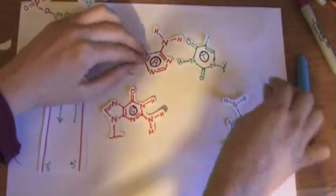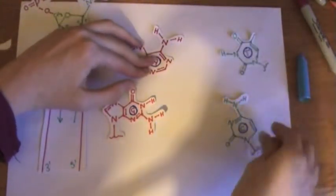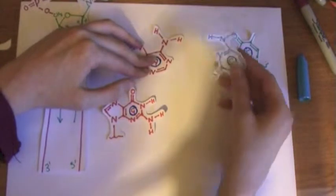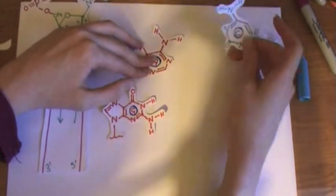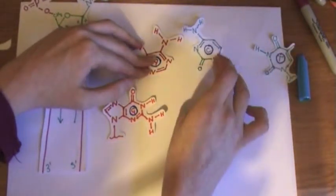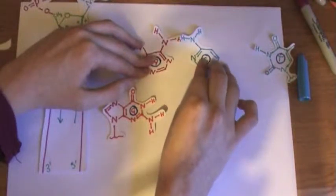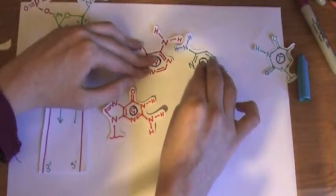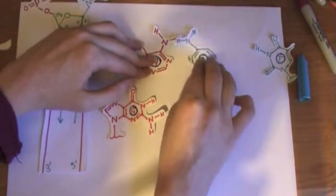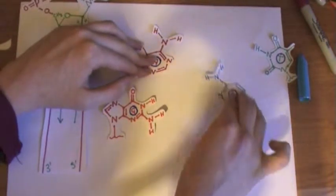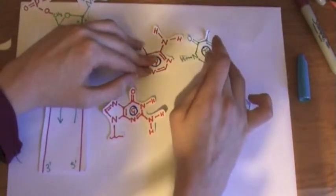But if we have cytosine in its place, so it'd be in that position, these aren't going to bind because you can't form hydrogen bonds between the two hydrogens. And these aren't going to have any interaction, so that's just not going to work out. So that's why A binds with T.